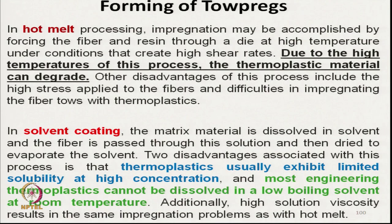In hot melt processing, impregnation may be accomplished by forcing the fiber and resin through a die at high temperature under conditions that create high shear rate. Due to the high temperature, the thermoplastic material can degrade — that is the problem. In solvent coating, the matrix material is dissolved in a solvent and the towpreg is passed through it. The main problem is that thermoplastics usually exhibit limited solubility at high concentrations, and most engineering thermoplastics cannot be dissolved in low boiling point solvents at room temperature.